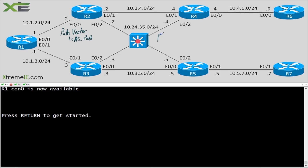In our best path selection process, if the next hop is reachable, the weight is unchanged, the local preference is unchanged, and locally originated routes — assuming everything is redistributed — then we look at who has essentially the shortest AS path. Remember, the shortest wins.